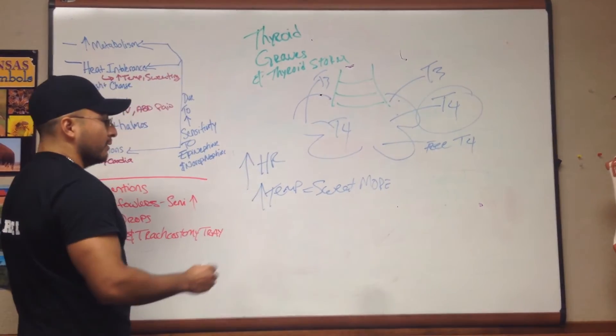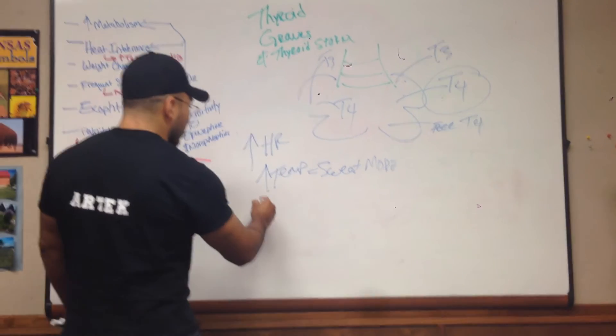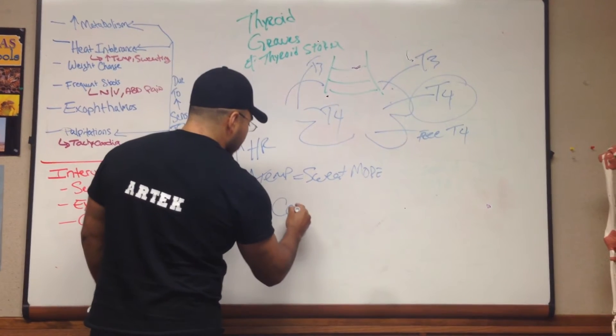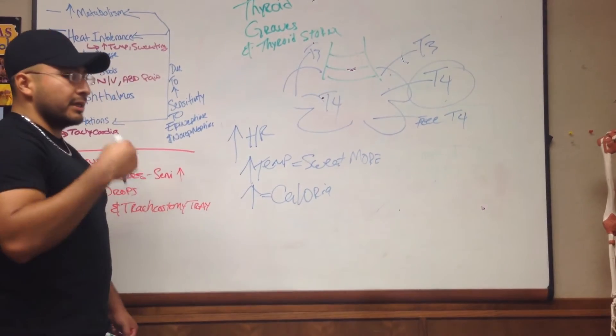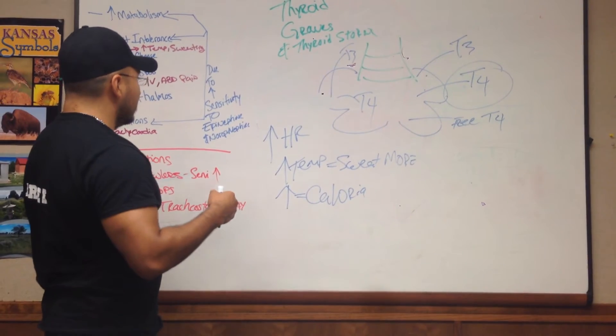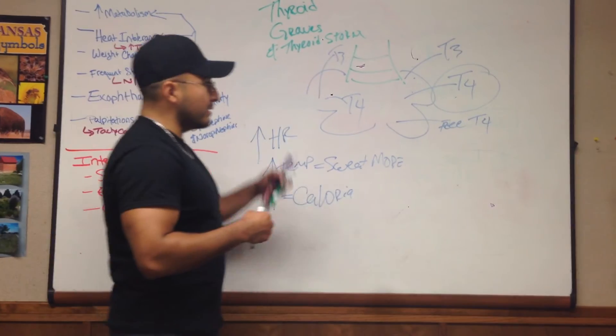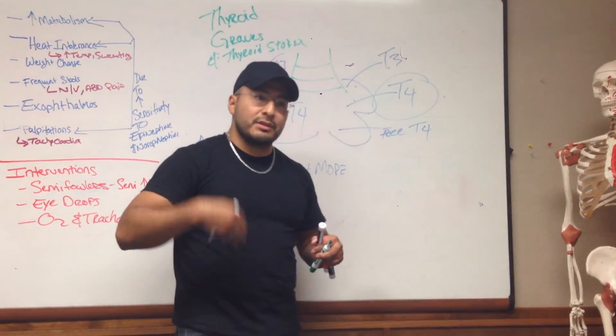The other thing, when you're using massive amounts of energy, what happens? Well, you consume calories. So you have increased calorie intake, increased calorie usage. So that's pretty much what T3 and T4 do. They put your body in a hypermetabolic state. So you're using more energy.